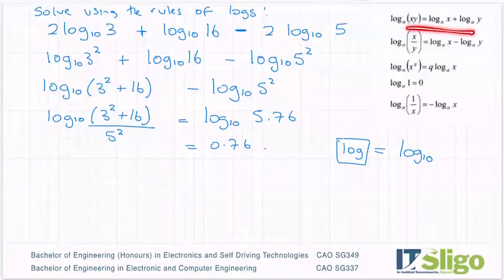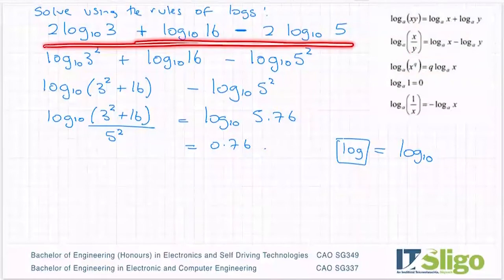So just using these three rules to solve it using the rules of logs. If it didn't say the rules of logs, of course, you could put that straight into the calculator and you should get 0.76.